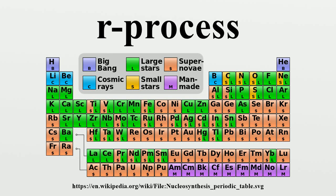The R process occurs to a slight extent in thermonuclear weapon explosions, and was responsible for the historical discovery of the elements Einsteinium and Fermium. The need for some kind of rapid capture of neutrons was seen from the relative abundances of isotopes of heavy elements given in a newly published table of abundances by Hans Suess and Harold Urey in 1956.